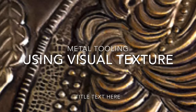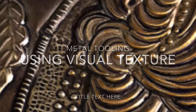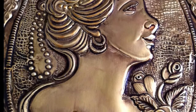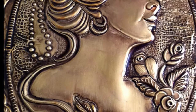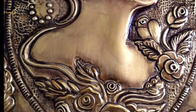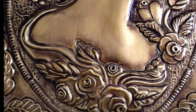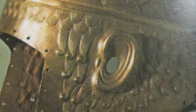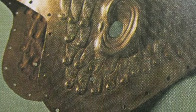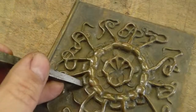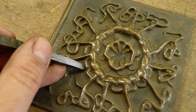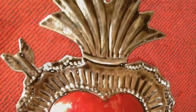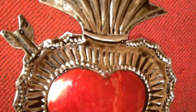Today we're going to start talking about metal tooling using visual texture. Metal tooling is a type of low-relief sculpture in which tools are used to create a design on metal. This is a centuries-old practice and it can be found in artworks including armor plates from ancient Greece, King Tut's mask, and Mexican tin art designs.